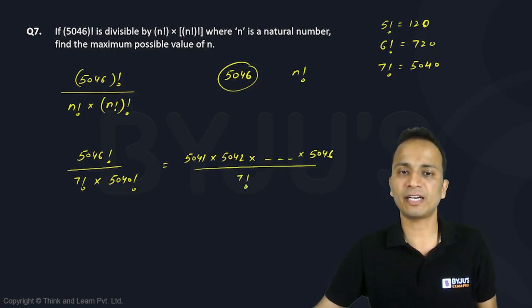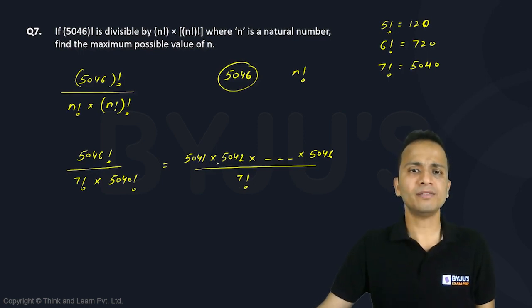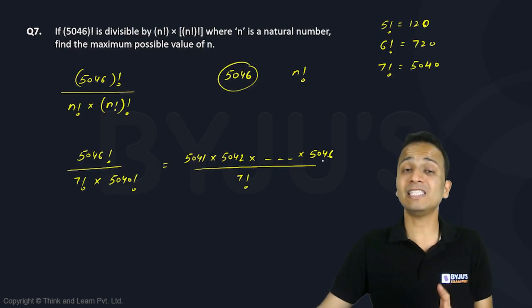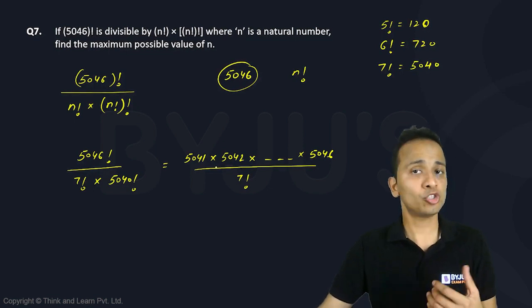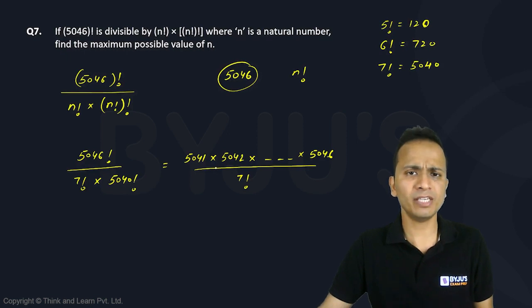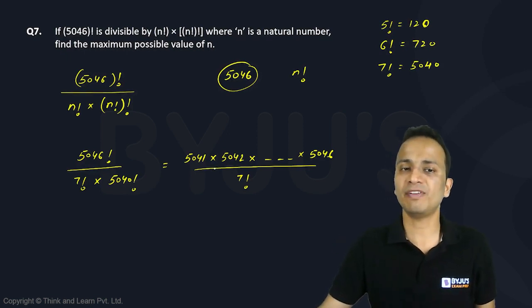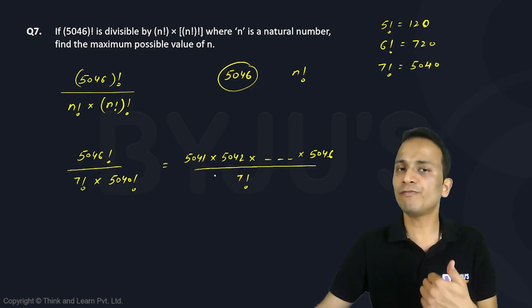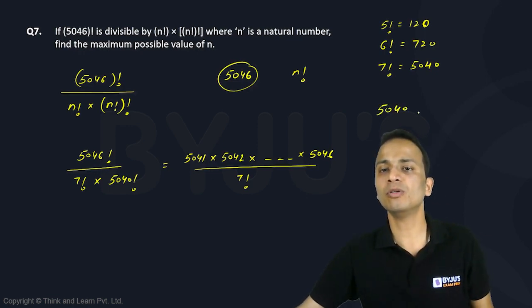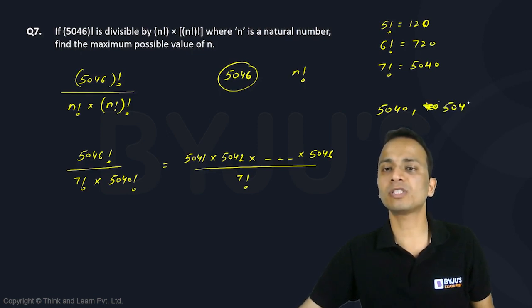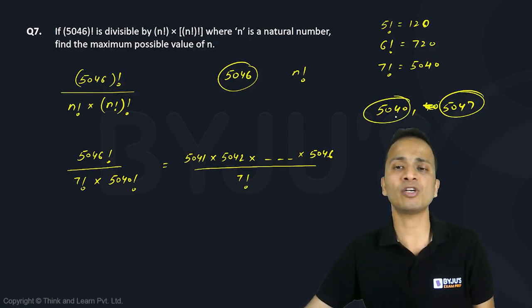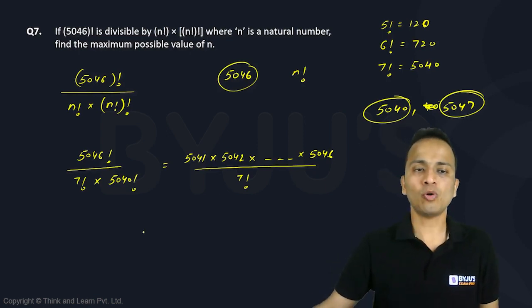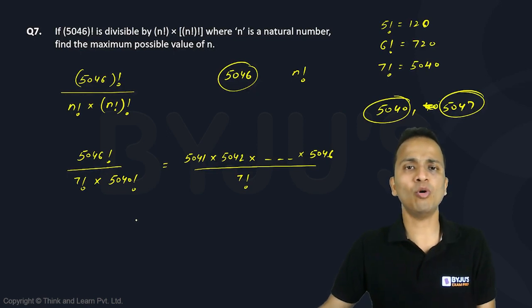Looking at the numerator — the six terms from 5041 to 5046 — none of these is divisible by 7. Since 5040 is divisible by 7 and the next multiple of 7 after that is 5047, none of the terms between 5040 and 5047 is divisible by 7. So the entire product will not be divisible by 7 factorial, meaning n = 7 is not a valid value. I'll try one number below, so n = 6.